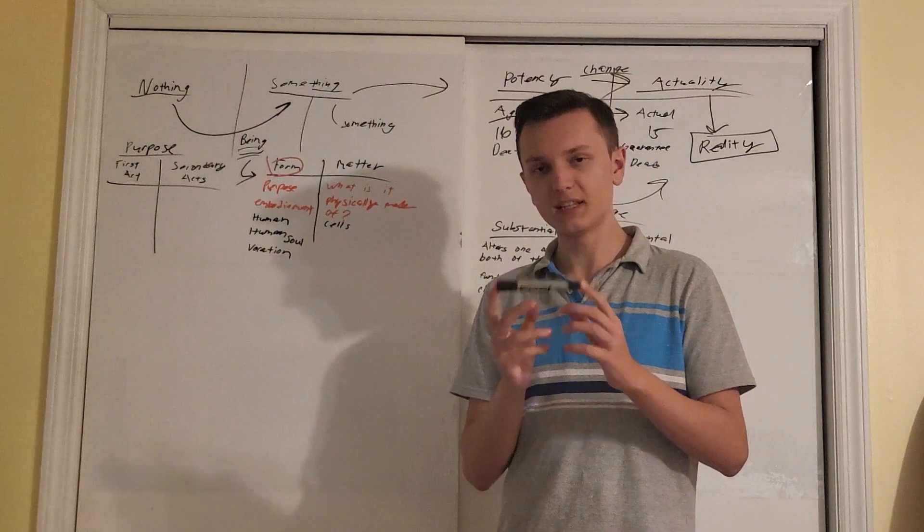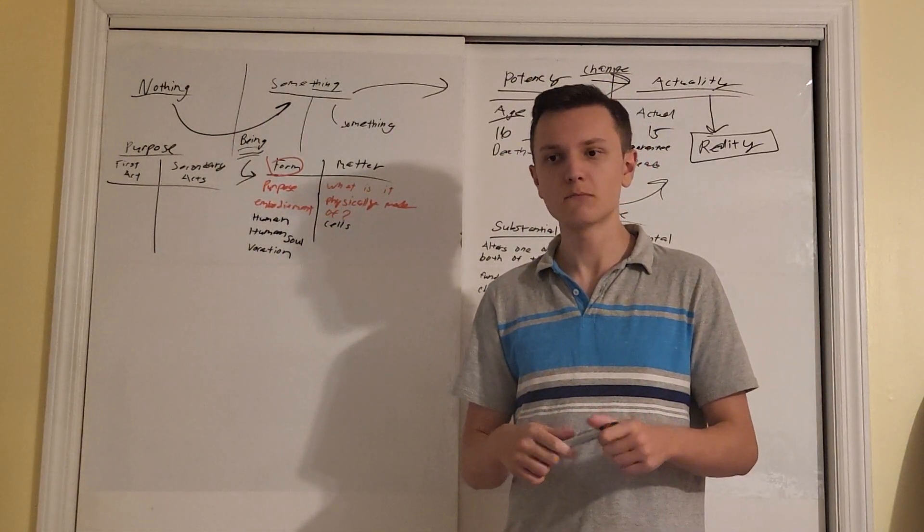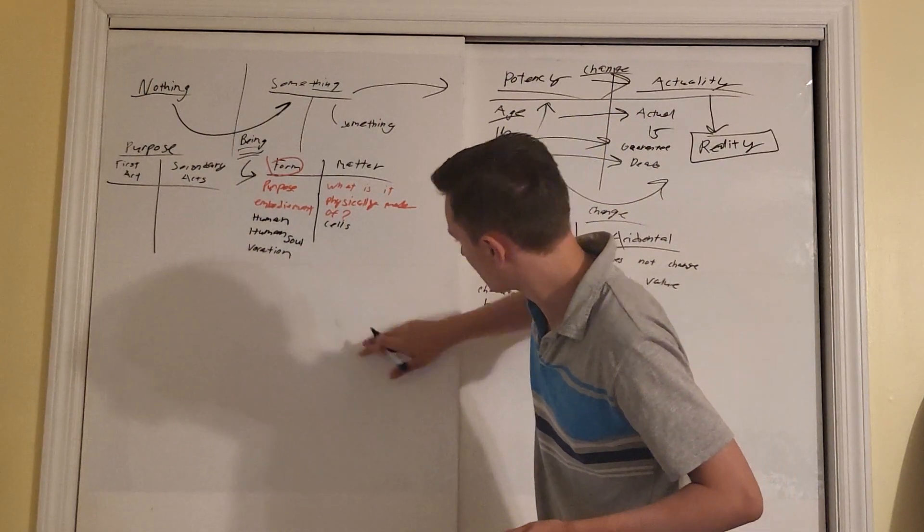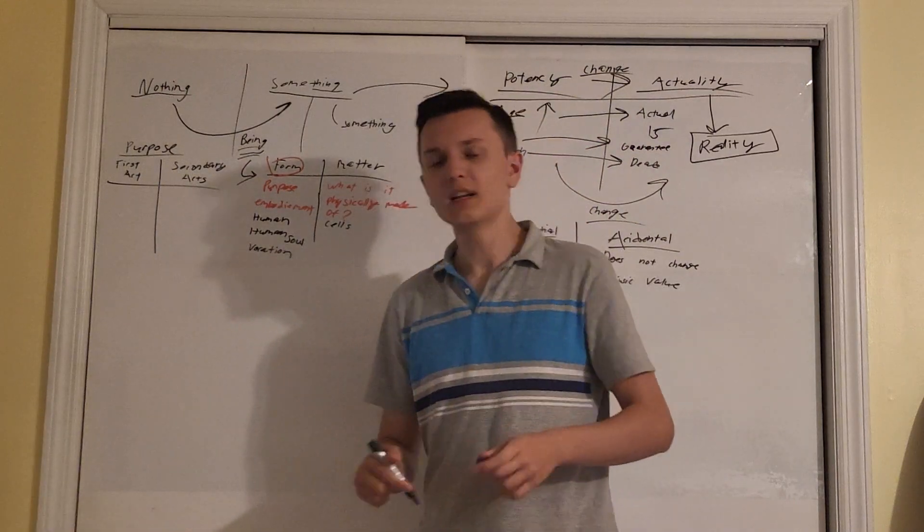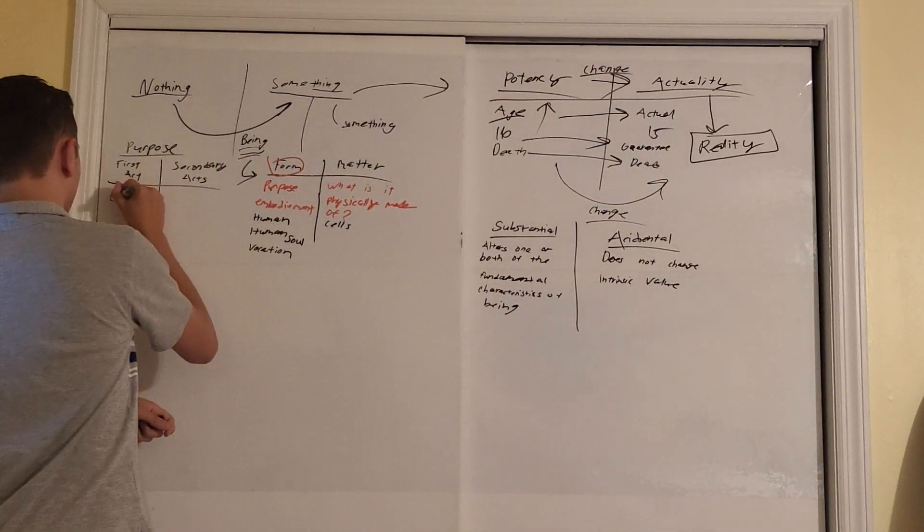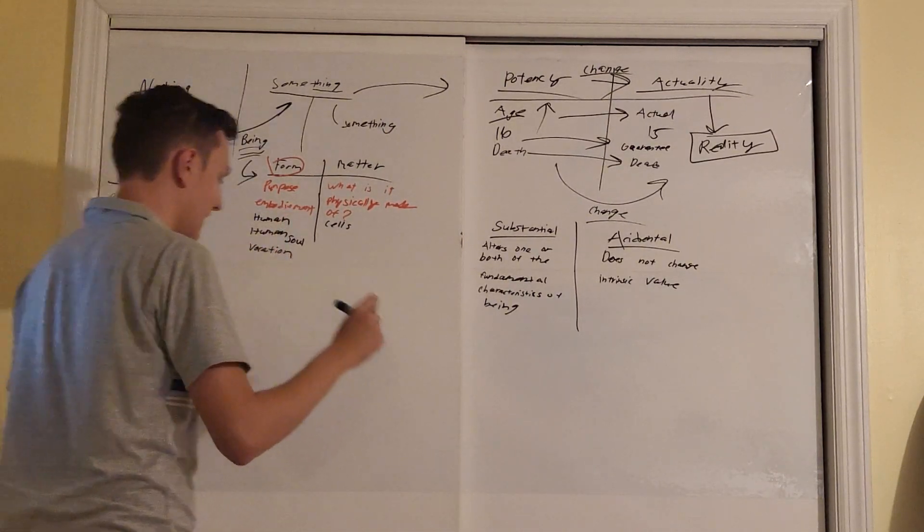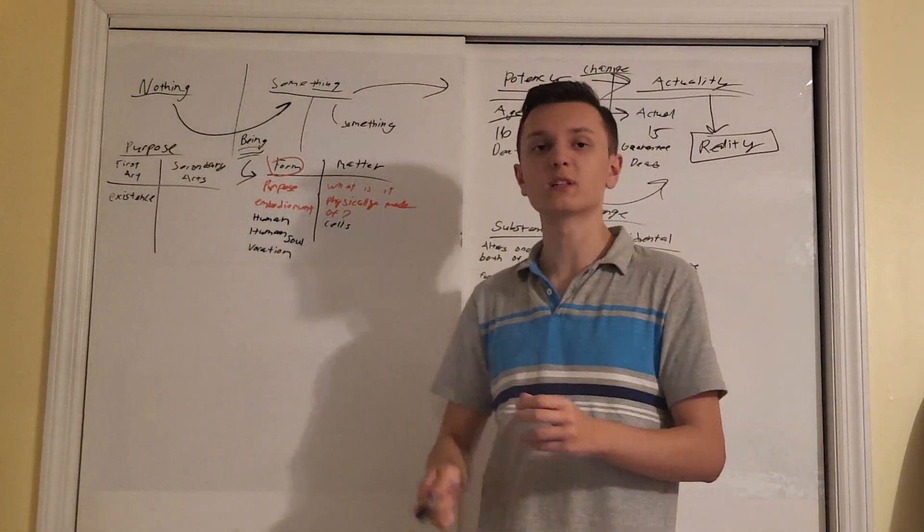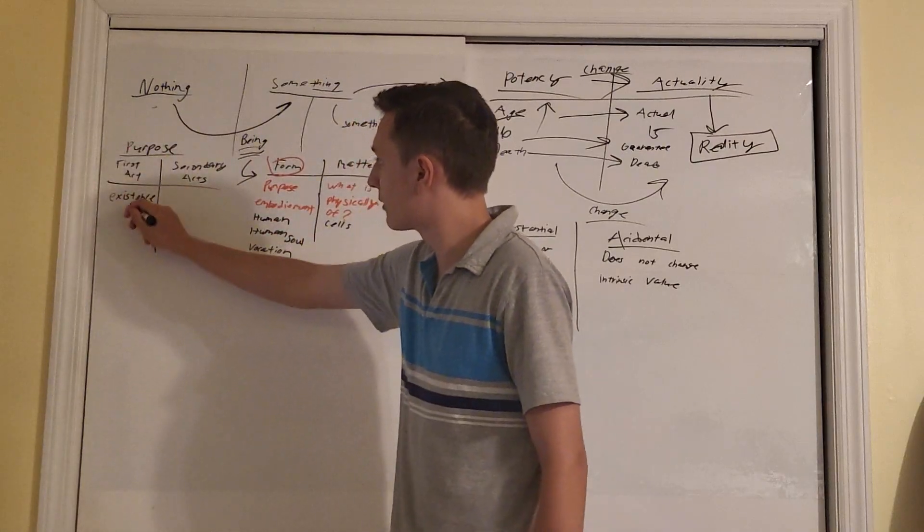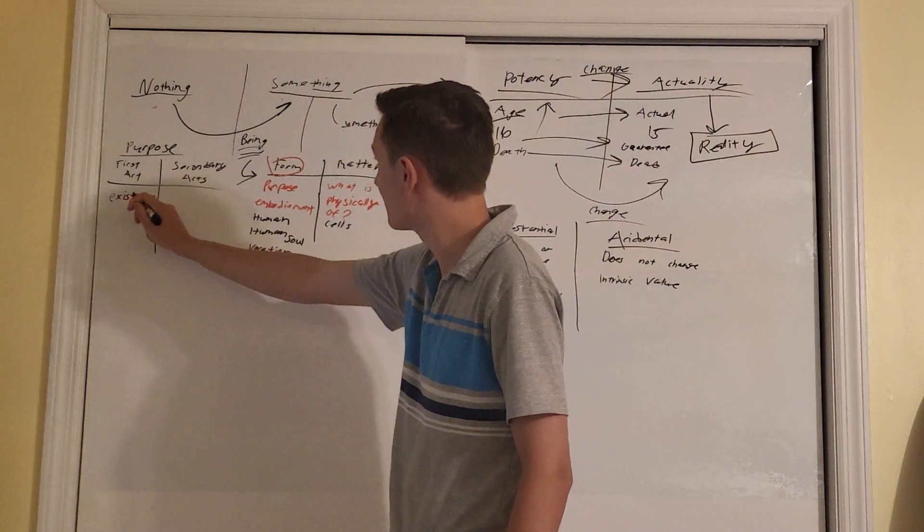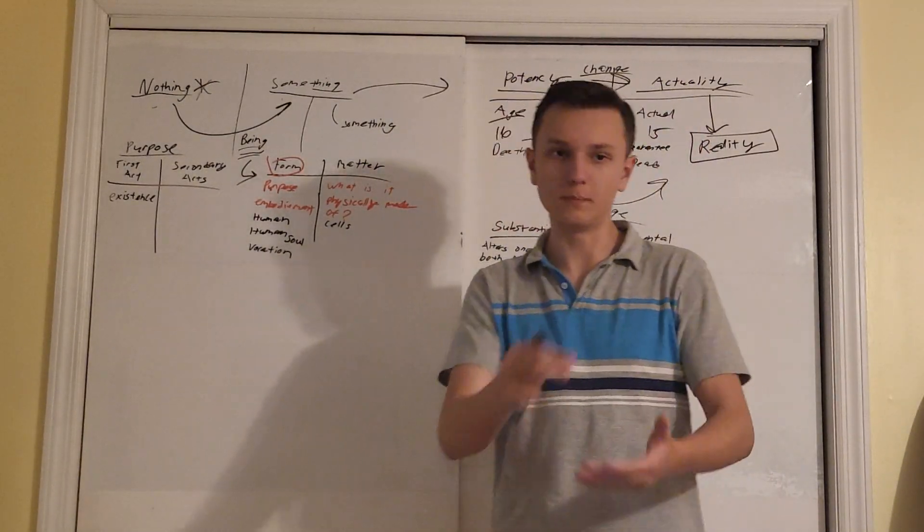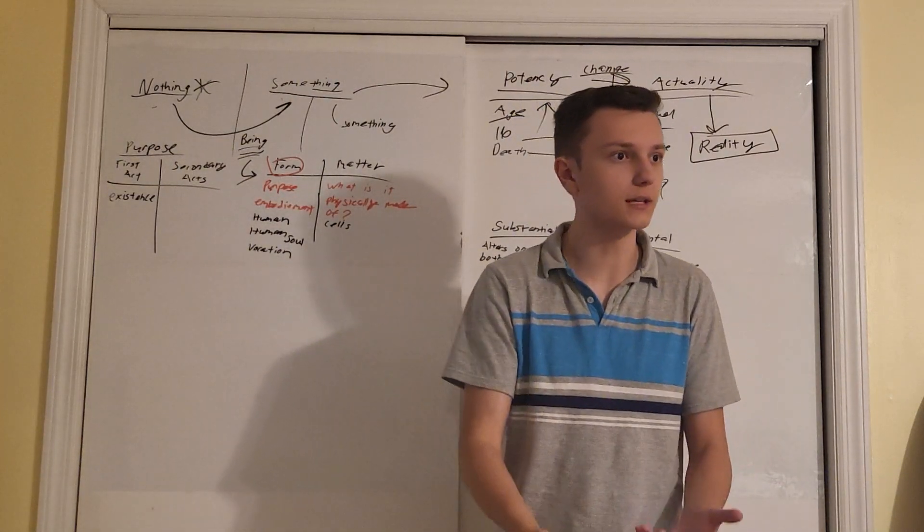Let's go back to the example of form. Form is the purpose of the matter. If the purpose of this pen - what is the purpose of the pen? Well, some might say the purpose is to write, the purpose is to get erased. But the primary act, which is often overlooked, is existence. Because nothing can happen unless, first and foremost, its purpose was to exist. If it didn't exist, it would be nothing. Everything must have the purpose of existence for it to be something. Because if it does not have existence, it doesn't have being, and therefore it is nothing.